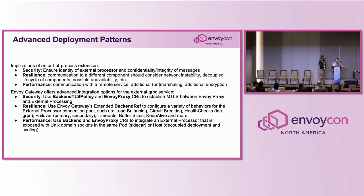To mitigate these concerns, Envoy Gateway offers a lot of advanced configuration options. For security, we can establish mTLS between Envoy proxy and the external processor. For resilience, we can leverage Envoy Gateway's extended backend ref to specify connection pool behavior, health checks, failover, circuit breakers, and timeouts. For performance, Envoy Gateway makes it possible to integrate an external processor using Unix domain sockets — not just TCP sockets — which opens a path to reduce latency and the performance impact of using an out-of-process extension.